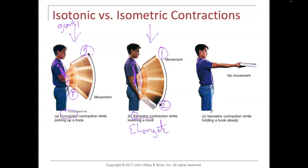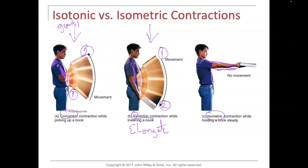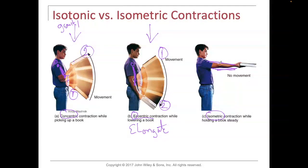In picture C, isometric means same length — same meter, same length. The muscles in the front and the muscles in the back are contracting at the same time, and there's no joint movement because both sides are contracting to stabilize the book right in the middle. During contraction you can have shortening, lengthening, or muscles remaining the same length, but there's still tension — that's isometric.